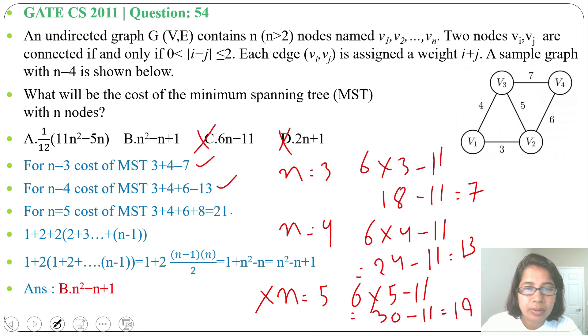Answer is option B. You can also check for option A, it will satisfy for n=3 and 4, but not for n=5. I already discussed minimum spanning tree, just go through that lecture. And if this lecture is helpful for you please like and subscribe. Thank you.